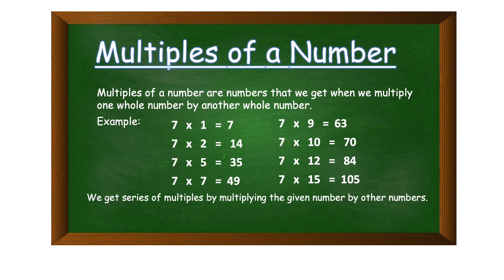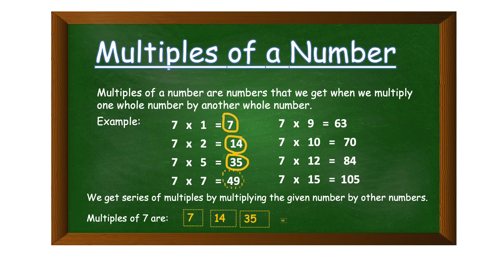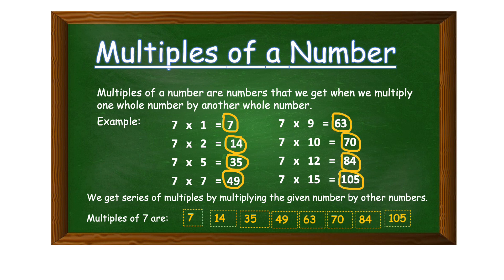Seven times twelve is eighty-four, seven times fifteen is one hundred and five. We get a series of multiples by multiplying the given number by other numbers. So multiples of seven are: seven, fourteen, thirty-five, forty-nine, sixty-three, seventy, eighty-four, and one hundred and five.